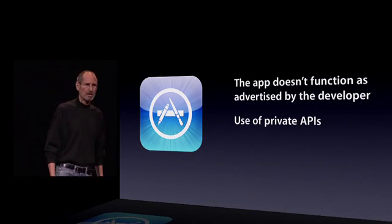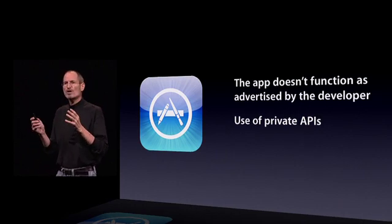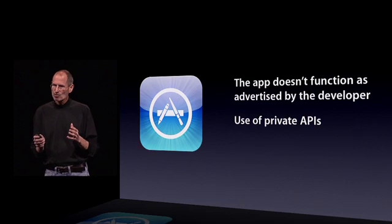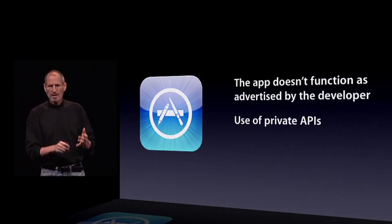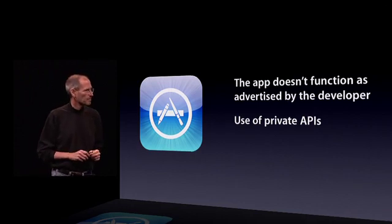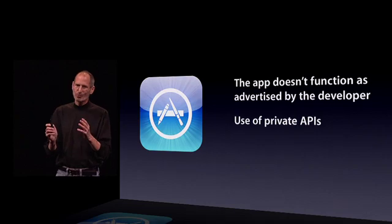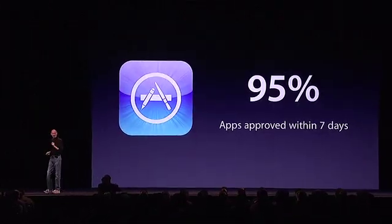The second reason is use of private APIs. We're very clear on this — developers can't use private APIs. Why not? Because when we change the OS, those private APIs are not guaranteed not to change. And if they change, the app will break and we'll have a very unhappy customer. If they upgrade their OS and half their apps break, they're not going to be happy campers. And developers that use private APIs, of course, know exactly what they're doing. The third reason we reject apps: they crash. So I think if you were in our shoes, you would be rejecting these apps for the same three reasons. Even with all of this, 95% of these apps are approved within seven days.